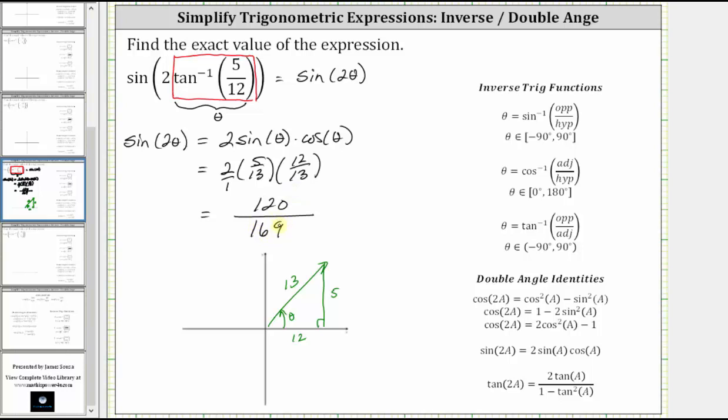And this fraction does not simplify, so now we have the exact value of the original expression: one hundred twenty over one hundred sixty-nine.